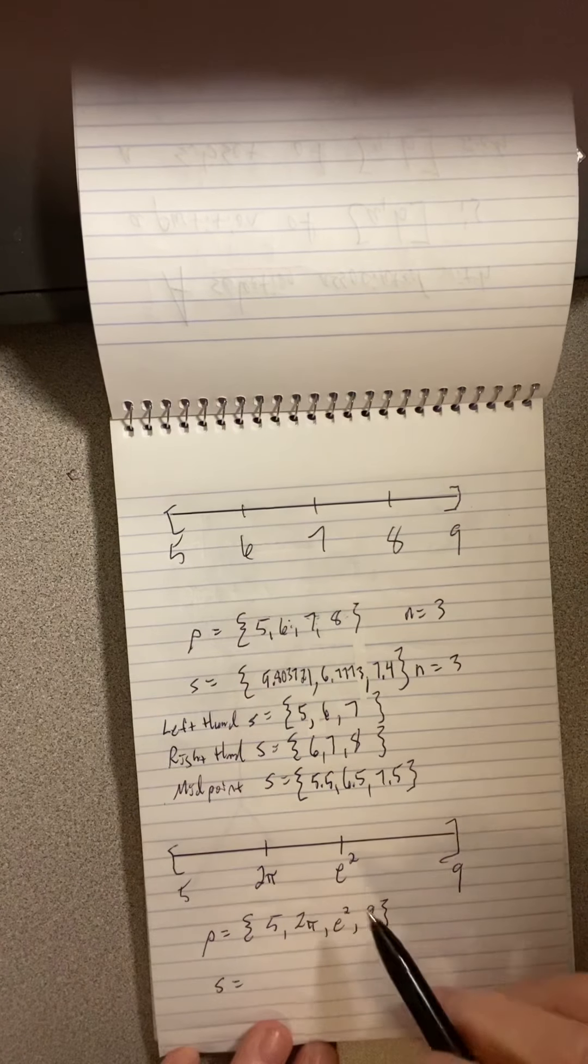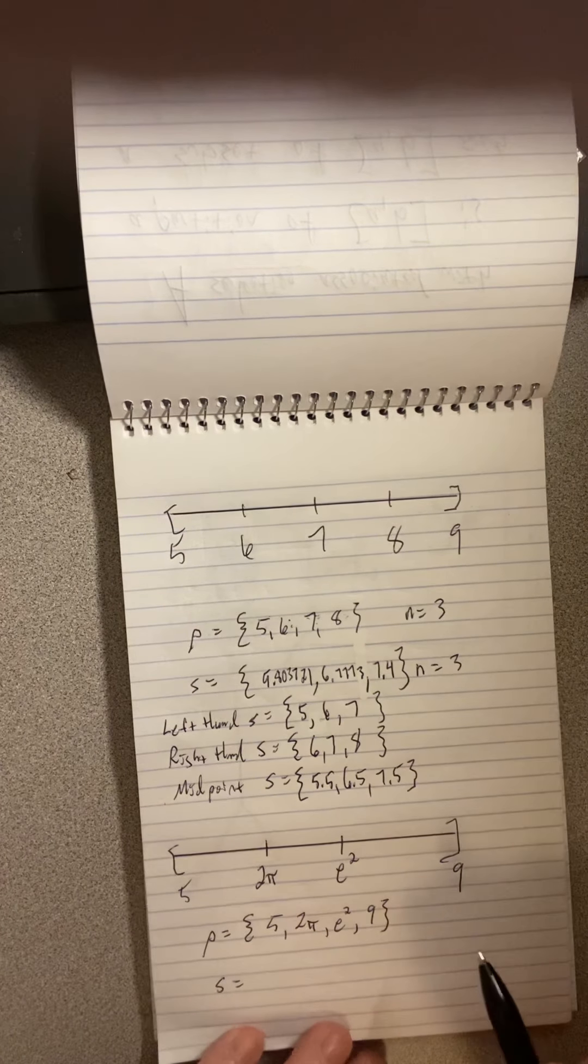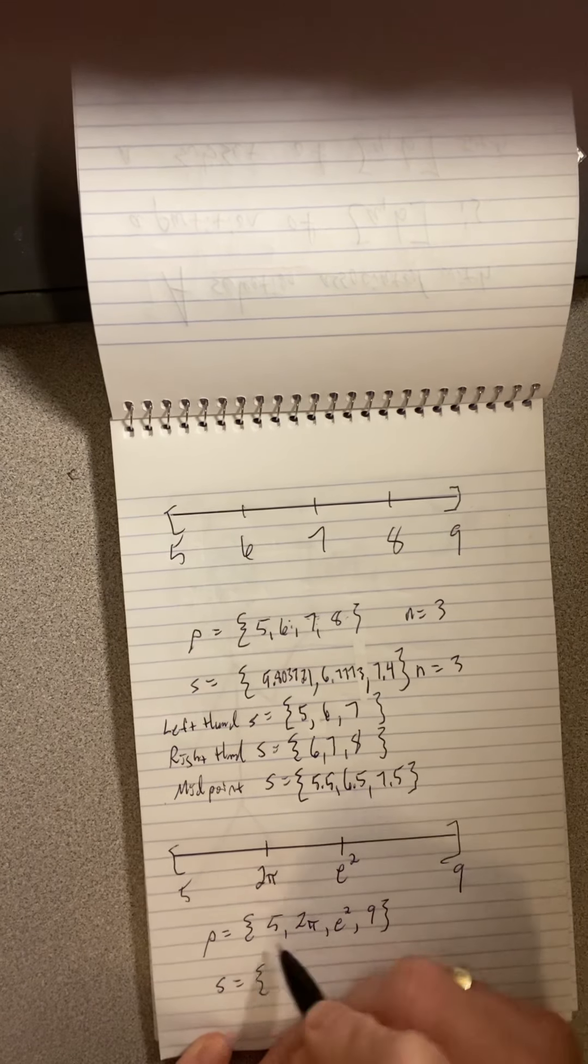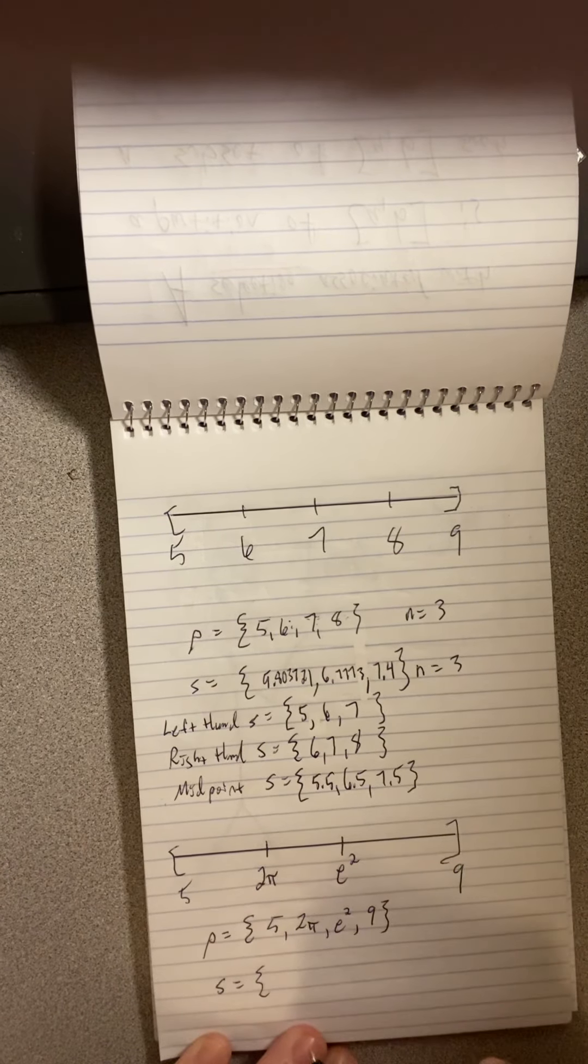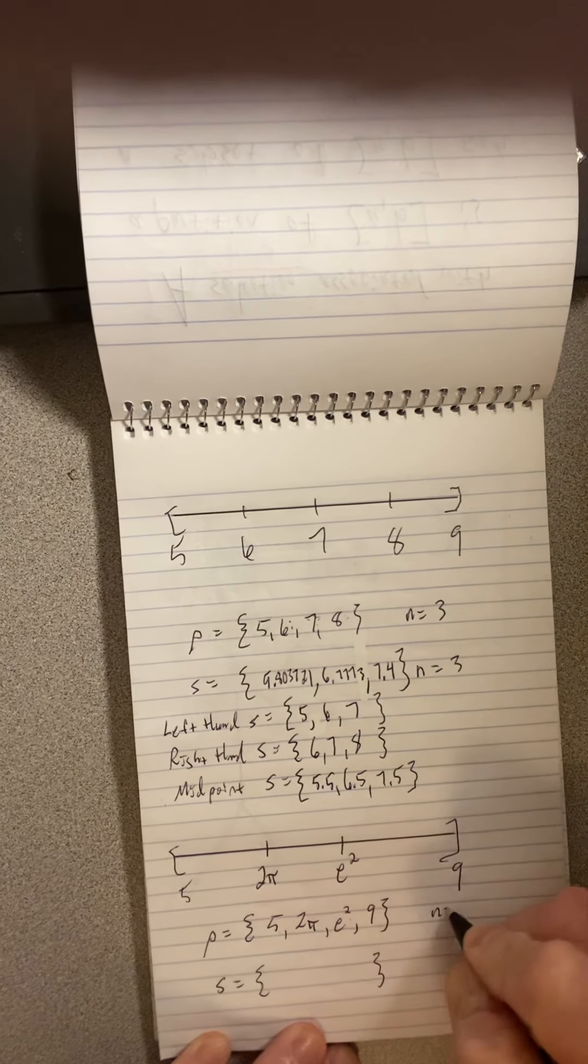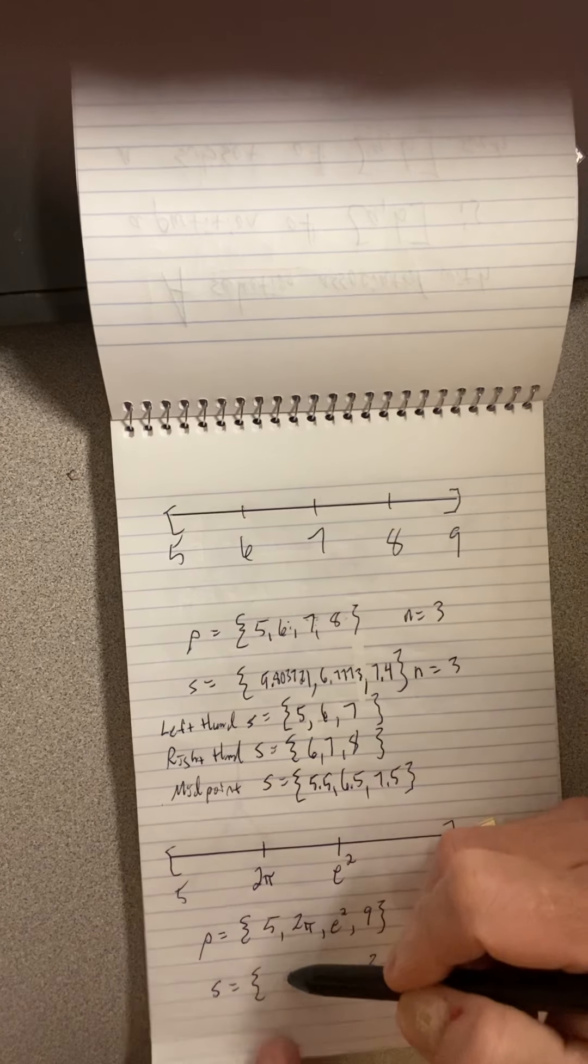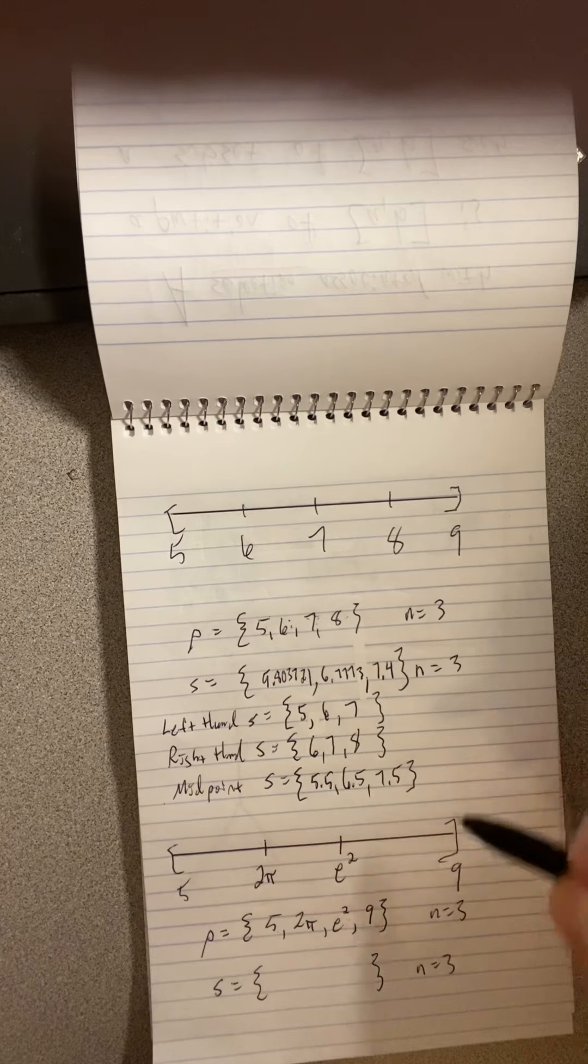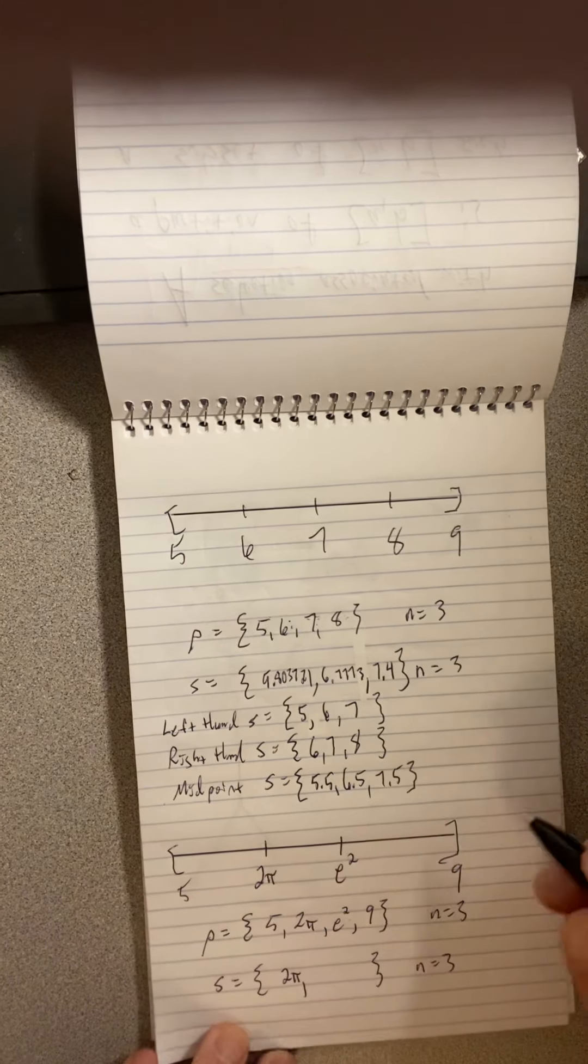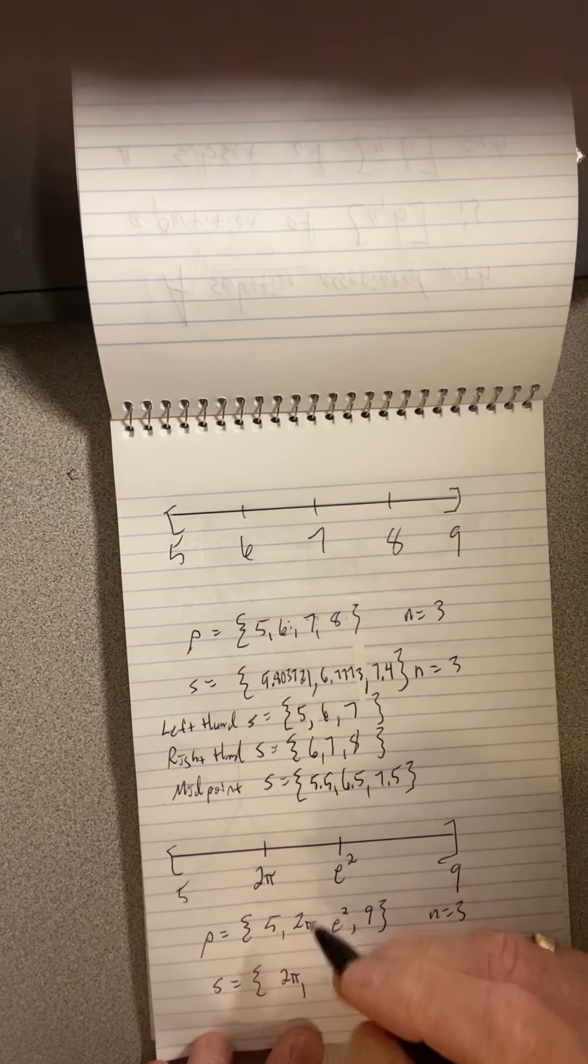So, here's one more example, just to show you something that could happen that's confusing and to do an example that's irregular. Here's a partition of this interval. It was rather irregular. Again, we have 0, 1, 2, 3, so the size is 3. So I'm going to get my first, second, and third selection points. Now, when I'm choosing from 5 to 2π, I can choose 2π. And when I'm choosing from 2π to e², guess what? I can choose 2π again.